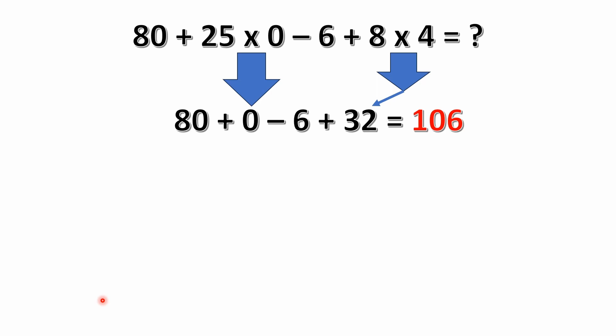And if you remember, anything times 0 is 0. So if you have 0 $25 bills or 25 $0 bills, whatever it is, it adds up to 0. So 25 times 0 is 0.